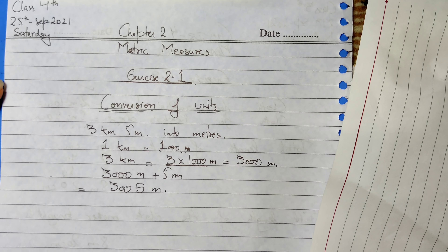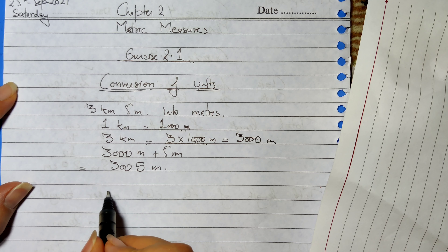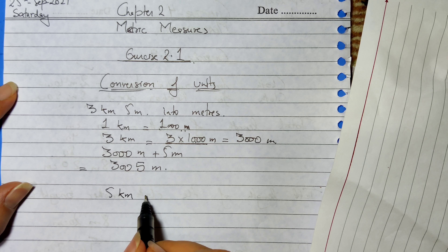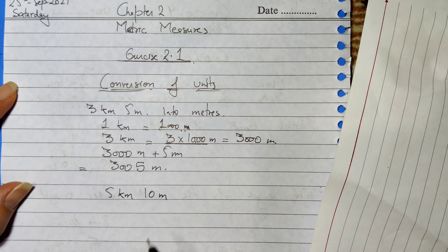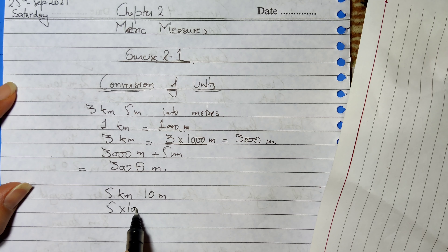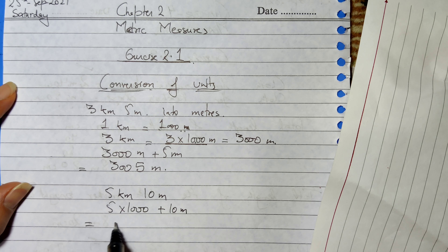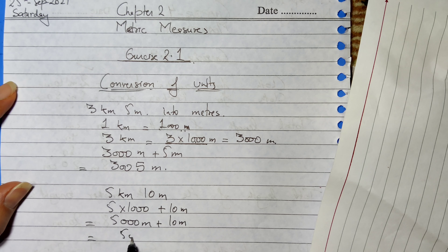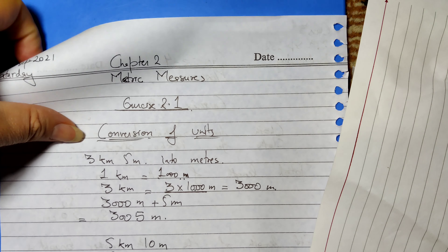Now if we have 5 kilometers and 10 meters, and we convert this into meters, then what do we do? 5 into 1000 plus 10 meters. So 5 into 1000 is 5000 meters, plus 10 meters, that is equal to 5010 meters. This is how we convert.